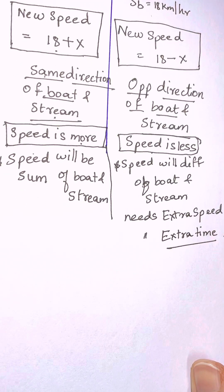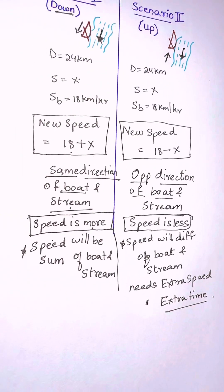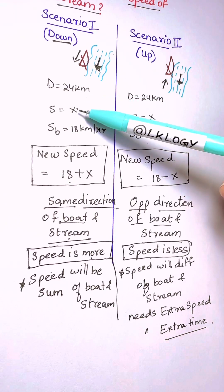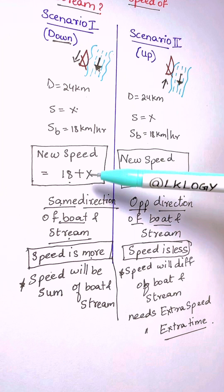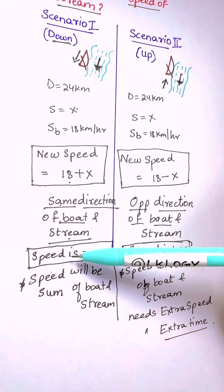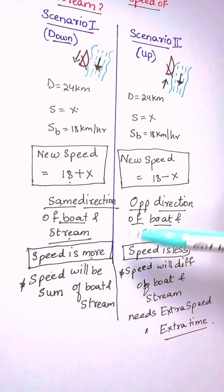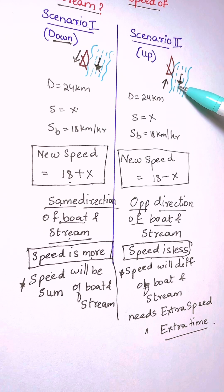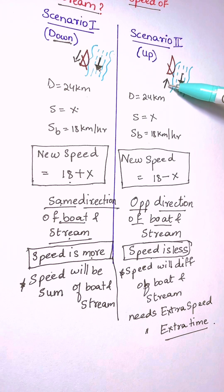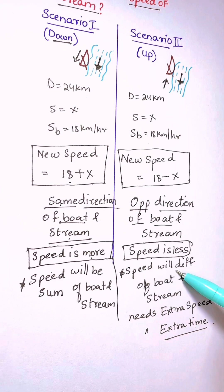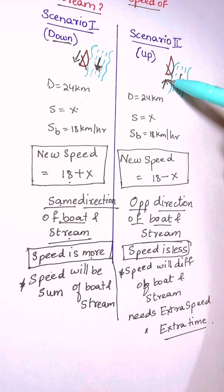In scenario one, the boat goes downstream and in scenario two it goes upstream. The distance is the same — 24 kilometers. The speed of the stream is x and the speed of the boat is 18 km/h. The new downstream speed is 18 plus x because they are in the same direction; the new upstream speed is 18 minus x because they are in opposite directions.